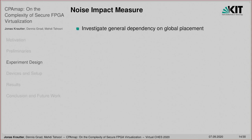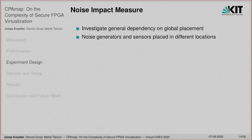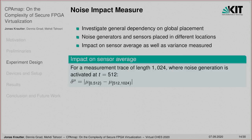To investigate the general dependency on the global placement of attacker and victim design, we defined a noise impact measure to assess the impact that a noise-generating module in one region of the FPGA has on sensors in other regions. We placed noise generators and sensors in different locations of the chip and measured the impact on the sensor average value as well as the sensor variance. We defined this impact by taking a measurement trace of length 1024 where noise generation is activated after 512 samples; the impact is the absolute difference between the average of the first and second half of the trace.